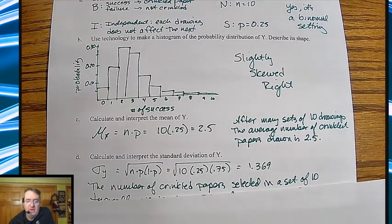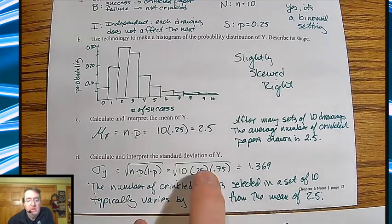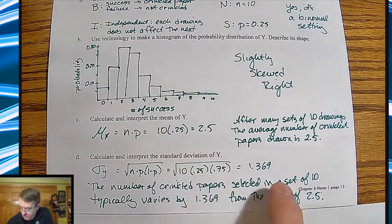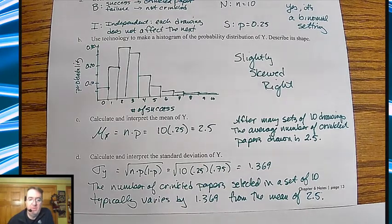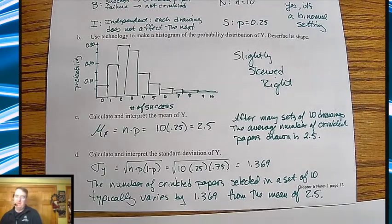And then down here for the standard deviation, standard deviation, again, is equal to the formula, equal to the parts plugged in, is equal to 1.369. Okay? The number of crinkled papers selected out of a set of 10 typically varies by 1.369 from the mean of 2.5.